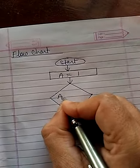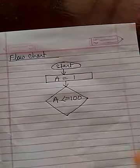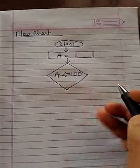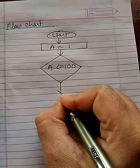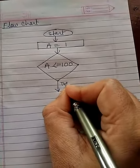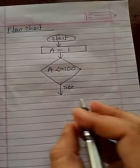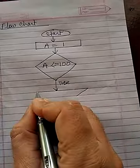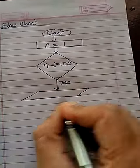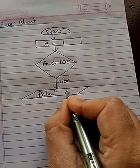If value of a is less than equal to 100, if this condition is true, then we are using the display box. Print a.